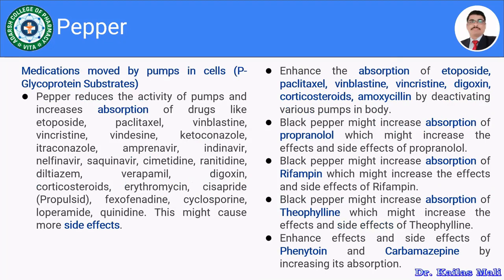Furthermore, regarding medications moved by pumps in the cells — the P-glycoprotein substrate: more than 60% of drugs given by oral route are affected. Piperine or pepper has the ability to reduce the activity of the P-glycoprotein substrate and thereby improves absorption of many drugs like etoposide, paclitaxel, vinblastine, vincristine, vindacine, ketoconazole, itraconazole, amprenavir, indinavir, nelfinavir, saquinavir, cimetidine, ranitidine, diltiazem, verapamil, digoxin, corticosteroids, erythromycin, cisapride, fexofenadine, cyclosporine, loperamide, and quinidine, leading to increased plasma concentration of these drugs.